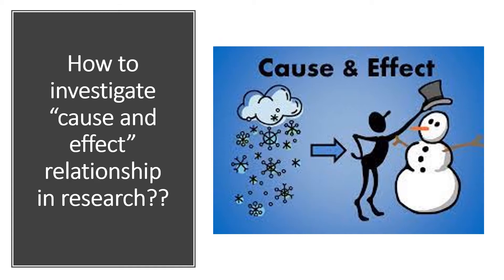Hi everyone. In today's video I will take up an example to try and explain how you can investigate the cause and effect relationship in research studies. To do so I'll use an article I was reading in a magazine the other day which mentioned that eating fish increases IQ of children. The story reported on the latest research that found that children who eat fish at least once a week have higher IQ than their non-fish-eating peers. Let's see how we can turn this into a cause and effect relationship study in research.